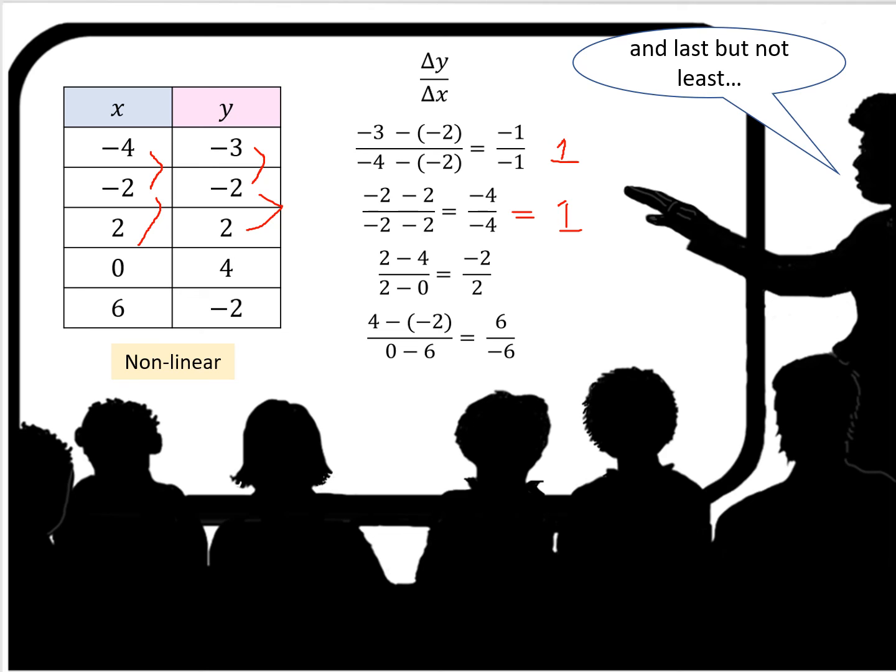So far so good. 2 minus 4 over 2 minus 0, 2 minus 4 is minus 2 over 2 minus 0, which is 2. This is not equal to 1. This equals minus 1.